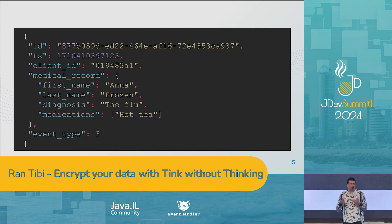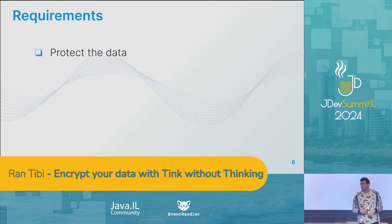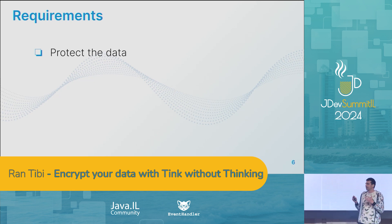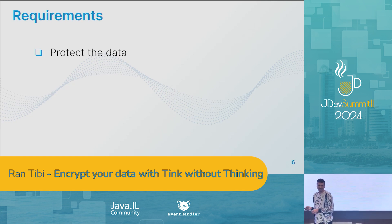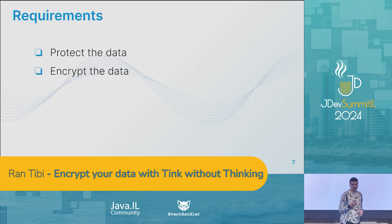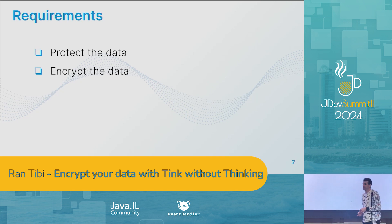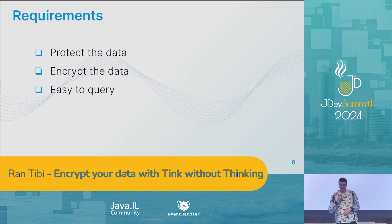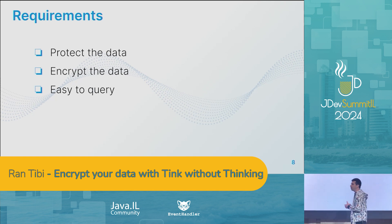So as a service provider, we wanted to prevent that. We started our project with a few requirements. First of all, we wanted to protect our data — we wanted to make sure that our sensitive data is secure and won't leak. Our clients also required us to encrypt the data in case we save it, so encryption became the second requirement. And the last requirement came from the BI team — they asked for the data to be easy to query, and that they won't have to write complex code every time they read it or try to get some insights from it.